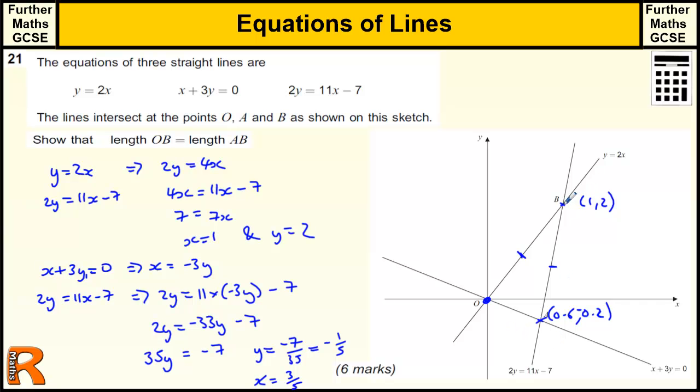And now we're going to do a little bit of Pythagoras to tell the length of these lines. So this line here is the diagonal, the hypotenuse of a 1 by 2 triangle, right angle triangle. So OB is equal to the square root of 2 squared plus 1 squared, which is the square root of 5.